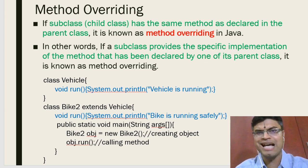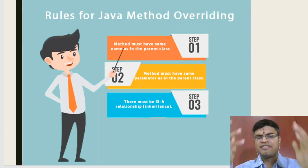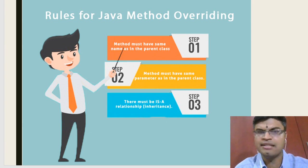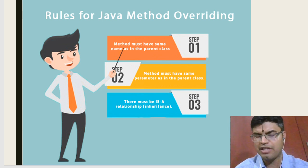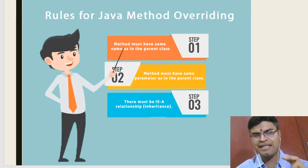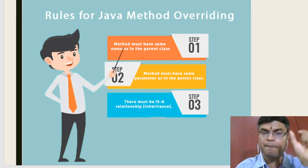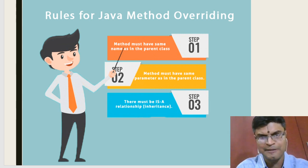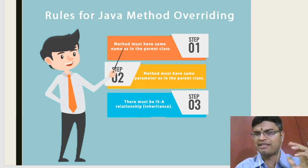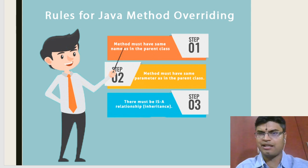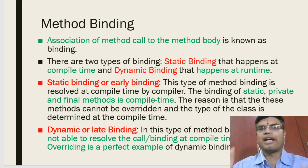These are the rules for method overriding: first, the method names in both classes should be the same; second, the parameters defined for each method should be the same in both classes; and third, there should be an 'is-a' relationship between the two classes — a parent class and a child class. These are the three important points for method overriding.